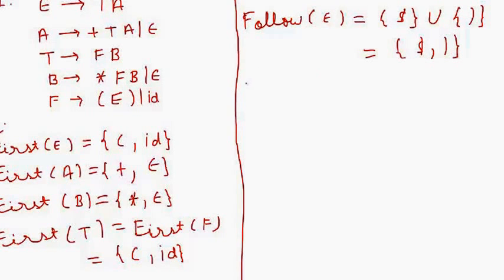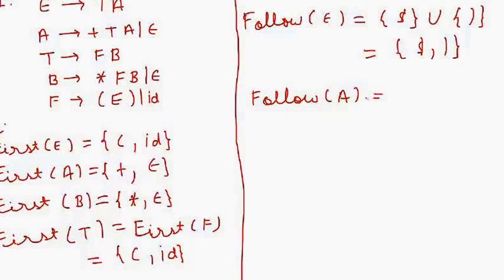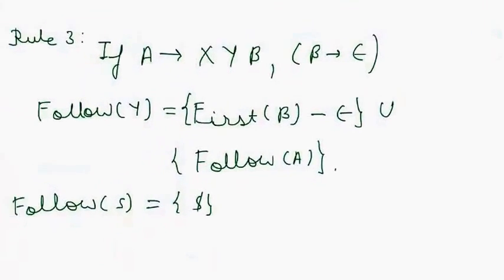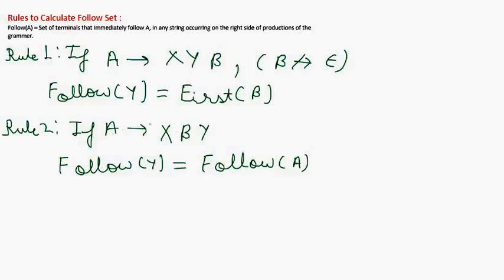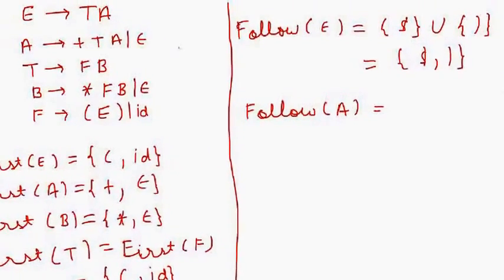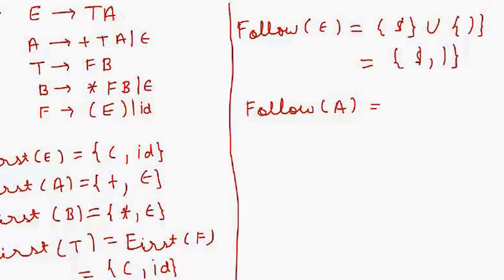Next we calculate Follow of A. According to rule number 2, if A gives X beta Y then Follow of Y equals Follow of A. In our grammar, A appears at the end of the production E gives T A, so nothing follows A on the right hand side. Therefore Follow of A equals Follow of E, which is { $, ')' }.